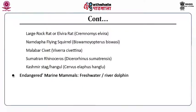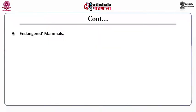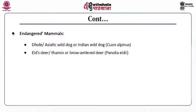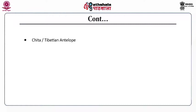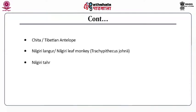Endangered marine mammals include the freshwater or river dolphin — specifically the Ganges river dolphin and Indus river dolphin. Endangered mammals include the Dhole or Asiatic wild dog, Eld's deer or Thamin (brown-antlered deer), golden langur, Himalayan white-bellied musk deer, hispid hare or Assam rabbit, hog deer, lion-tailed macaque, cheetah, Tibetan antelope, Nilgiri langur, Nilgiri leaf monkey, Nilgiri tahr, red panda, and wild ass or khur.